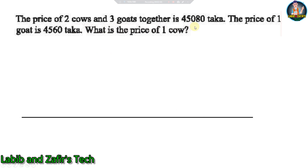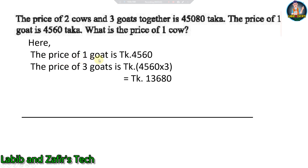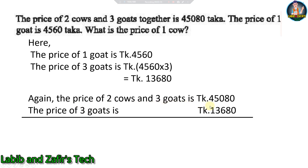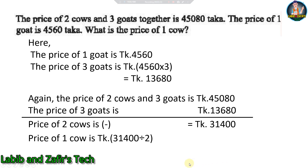Next problem: The price of two cows and three goats together is 45,080 taka. The price of one goat is 4560 taka. What is the price of one cow? Solution: Price of three goats = 4560 × 3 = 13,680 taka. Price of two cows = 45,080 − 13,680 = 31,400 taka. Price of one cow = 31,400 ÷ 2 = 15,700 taka.